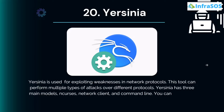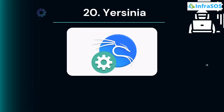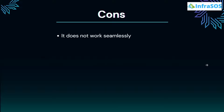At number 20 we have Yersinia. Yersinia is used for exploiting weaknesses in network protocols and can perform multiple types of attacks over different protocols. Yersinia has three main modules: NCurses, network client, and command line. Major pros include friendly shell script integration, the ability to set up Yersinia in different network segments for easier network assessment, a robust and highly visual NCurses GUI, and customizable preferences in the configuration file. Cons include that it does not work seamlessly on Windows and has limited documentation.